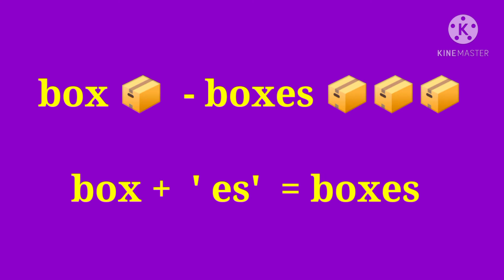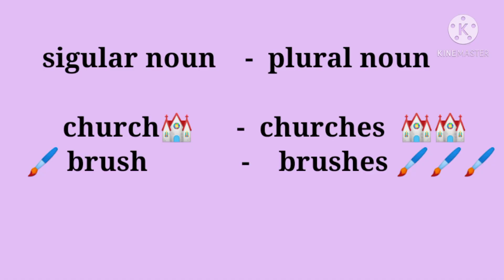Box is a singular noun and it ends with the letter X. So the plural form of Box is Boxes — B, O, X, E, S. We should not add only S to the word Box; instead, we add ES. In the same way: Church → Churches, Brush → Brushes. We add ES to these words because Church and Brush end with CH and SH respectively. For Glass → Glasses, we add ES because Glass ends with SS.